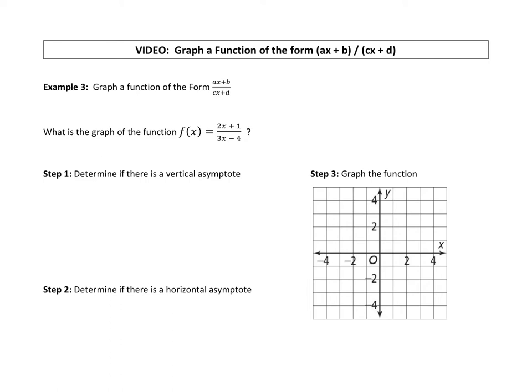All right, so now we're going to work on graphing a rational function. Here we have, it says, of the form ax plus b divided by cx plus d. So you can see that our function looks like that form. It's basically a polynomial divided by a polynomial. They happen to be linear. We have an x to the first divided by an x to the first, but we'll get into those details.